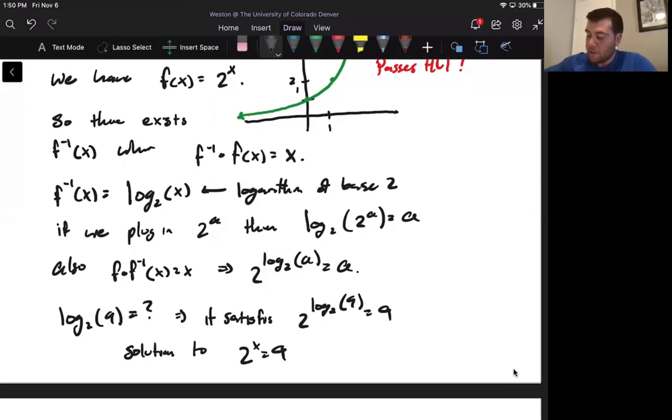And so because it's the solution to 2 to the x equals 9, and 2 cubed equals 8, we know that log base 2 of 9 is just a little bit bigger than 3, but it's going to be close to 3. All right. So that's all a logarithm is.